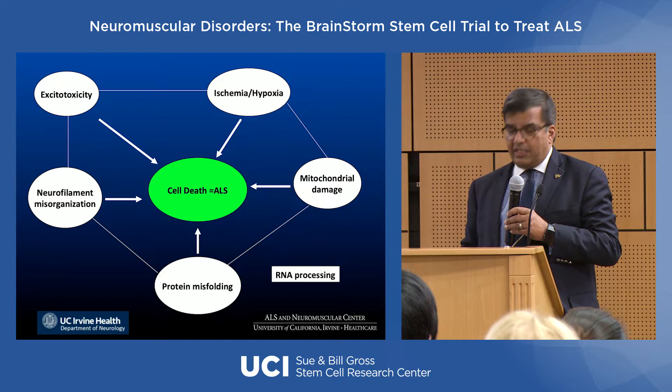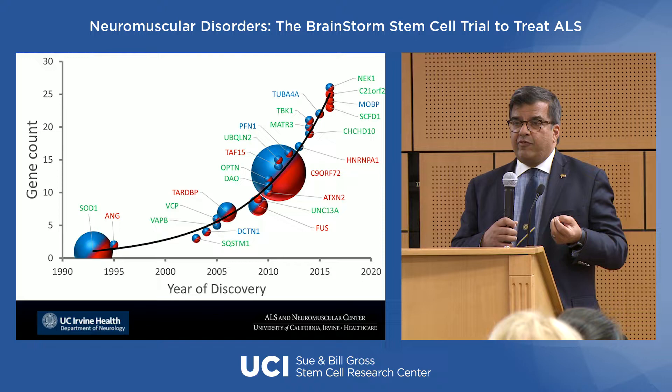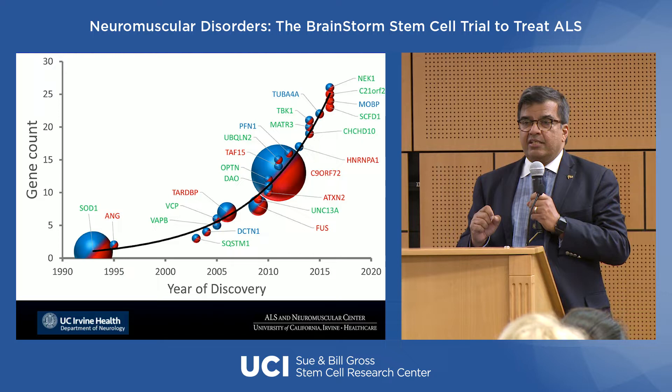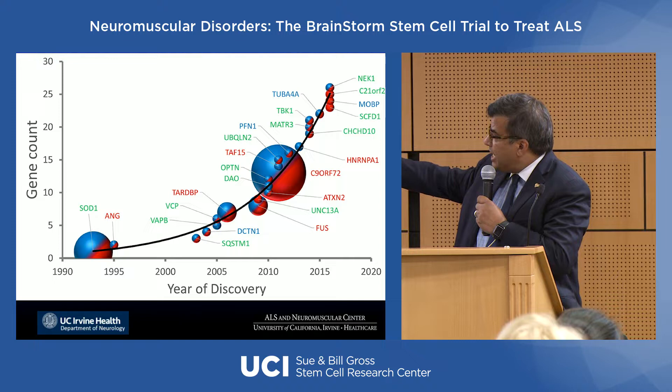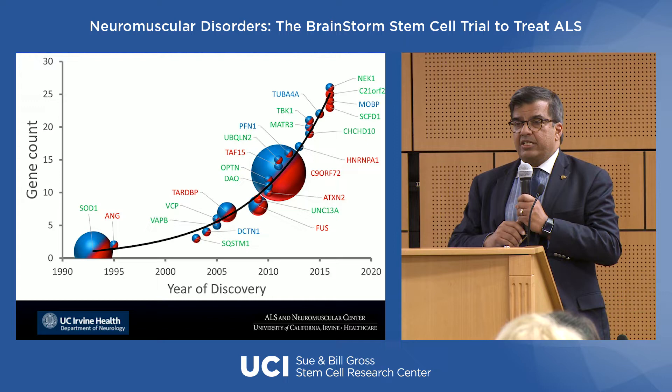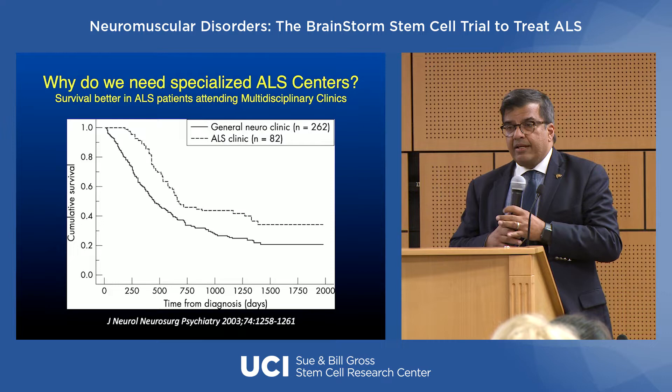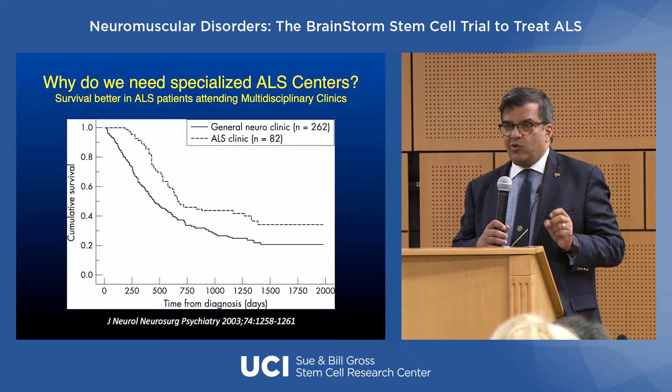We are also discovering more and more about the genetic forms of ALS. There has been an exponential increase in the number of genes now known to be associated with ALS. From 1994 when SOD1 was discovered, we now have over 20 genes that we think are associated with ALS.